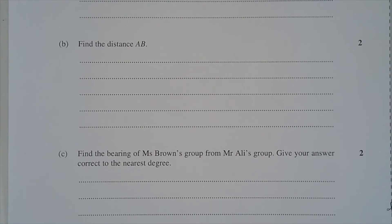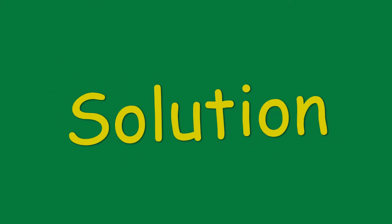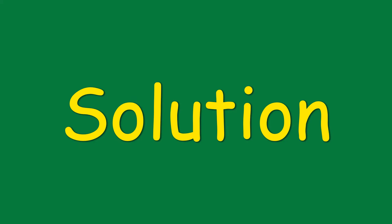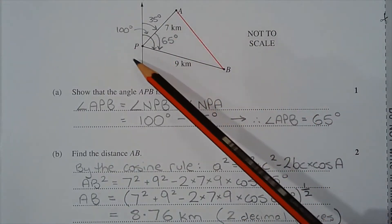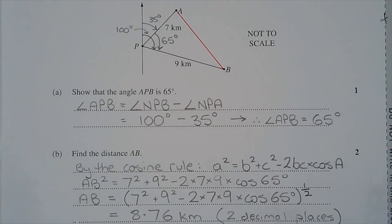Part B. Find the distance AB. In triangle APB, the sides PA and PB are known, as well as the included angle, 65 degrees, which was found in part A.